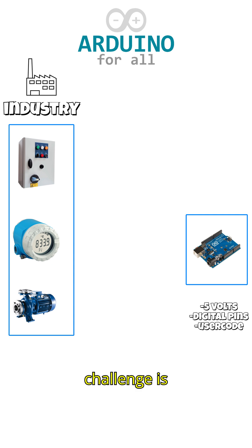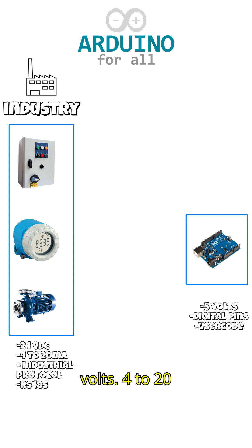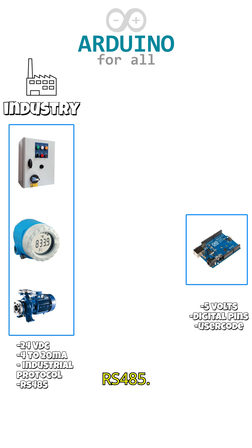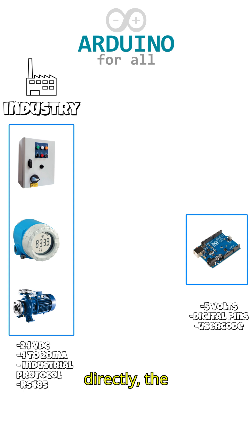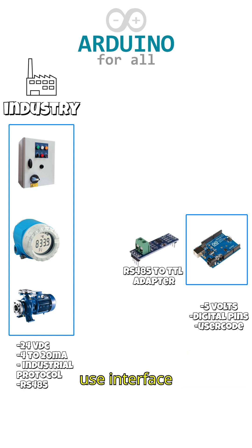The challenge is that industry does not use the same signals as Arduino. Industrial devices often work with 24 volts, 4 to 20 milliamp signals, or communication buses such as RS485. If we connected them directly, the Arduino would be damaged. To solve this, we use interface modules as bridges.